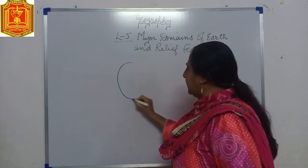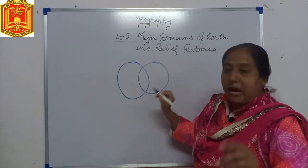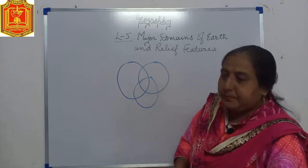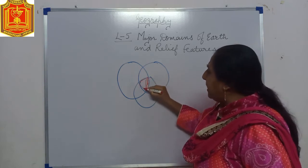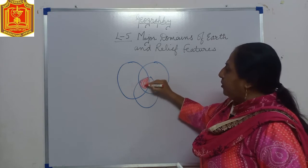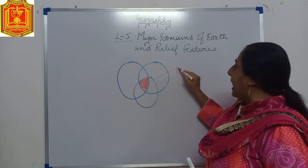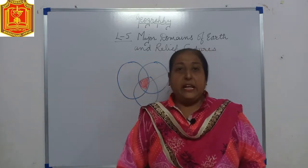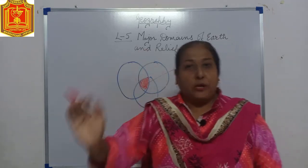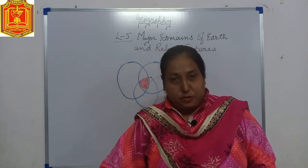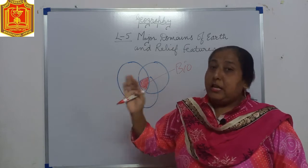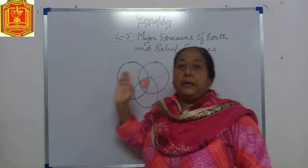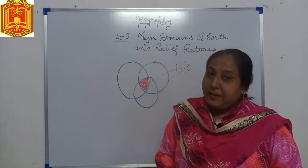Imagine three overlapping circles. The part where all three domains are meeting is known as your biosphere, where life exists. Here at this part you have land, you have air, you have water — that is where life is possible, because all the other three domains meet together. If only air and water meet, life is not possible. For life you need air, water, and land — all three other domains. So the place where the other three domains meet is your biosphere, and that is where life exists.